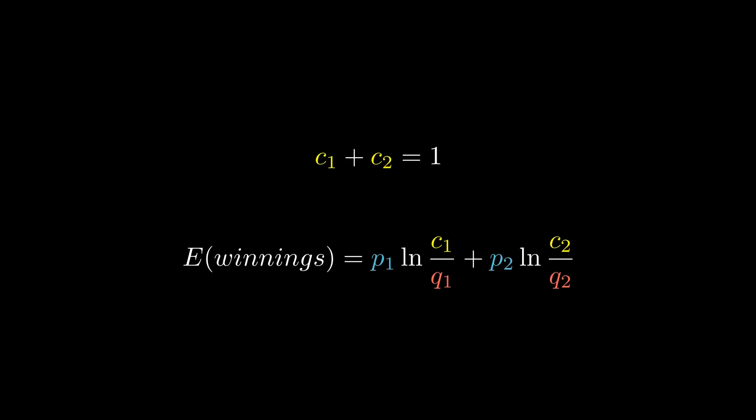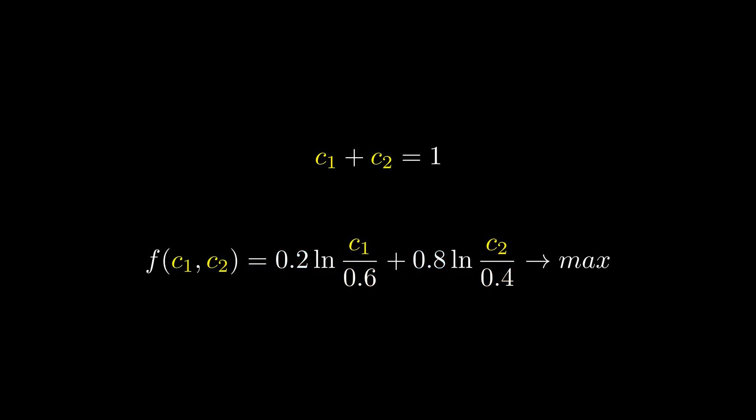More formally, we are facing a constraint optimization problem. We consider our true and false probabilities to be fixed and the way we distribute our bets between red and black to be the variable we can change. Our goal is to find c1 and c2 that maximize the wealth growth function while satisfying the constraint.